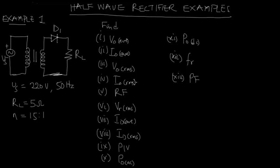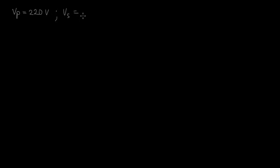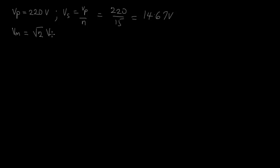Let us proceed by solving this problem. First, the primary transformer voltage VP is given as 220 volts, so the secondary voltage VS equals VP over n, which is 220 volts over 15, giving us 14.67 volts. The peak voltage VM equals root 2 times VS, which is root 2 times 14.67, giving 20.75 volts.